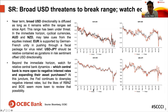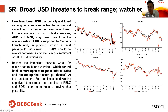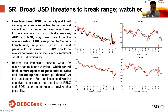Beyond the immediate horizon, relative central bank dynamics drive currency movements — specifically, which central bank is most open to negative interest rates and expanding asset purchase programs. Among the major global central banks, the RBNZ and the Bank of England are the two most likely to adopt negative policy rates, which naturally weighs against the New Zealand dollar and Sterling.